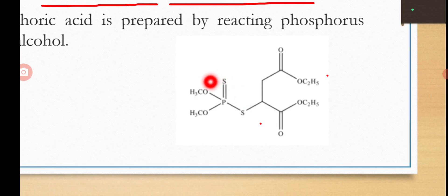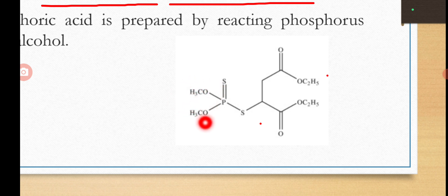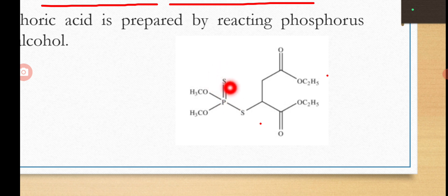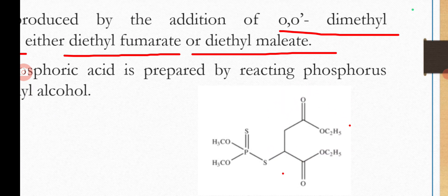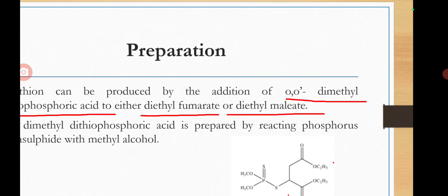यह phosphoric acid है — dithio में हमने एक oxygen को replace किया sulfur से, एक oxygen को replace किया। यह आपका OH होता है — यह phosphoric acid होता है। वहाँ आपने OH के hydrogen को replace किया है by CH3, CH3 — तो यह हो गया ortho-dimethyl। और यह oxygen replace है by sulfur — तो यह हो गया dithio। और यह आपका हो गया diethyl maleate।